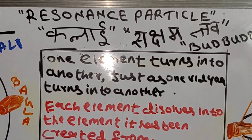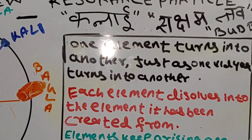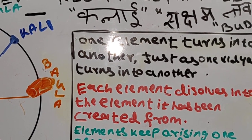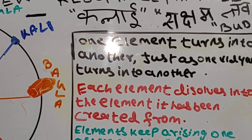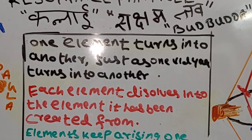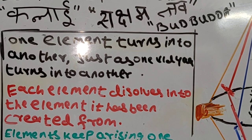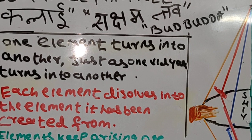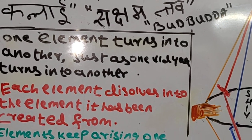This resonance particle is known as Kalai by Lord Buddha. Kalai means it is black in color, and also because it has the art of creation within it — it makes the same sense as resonance. Lord Shiva and even the Vedas called it Shukshma Tattva, meaning the subtlest of the subtlest elements.